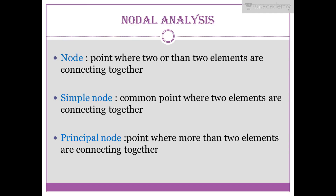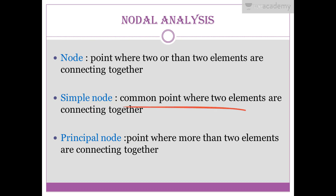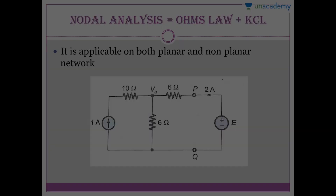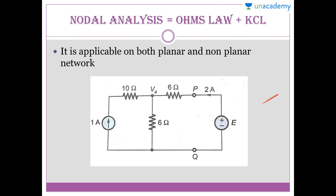What is nodal analysis? First, let me define what a node is. A node is a point where two or more elements connect together. There are two kinds of nodes: a simple node, which is a common point where exactly two elements connect, and a principal node or main node, where more than two elements connect. For nodal analysis, you need to know Ohm's Law — v equals iR — and KCL, which we have already covered.